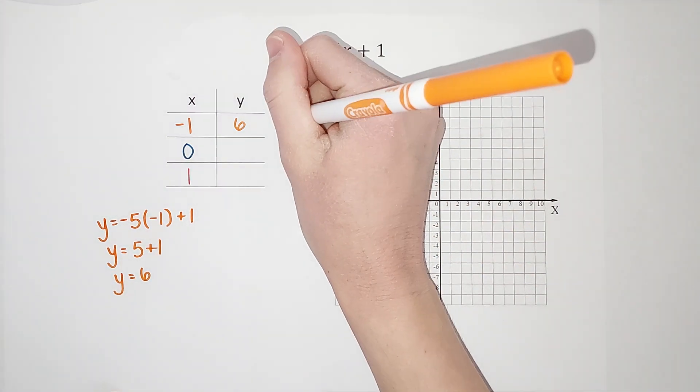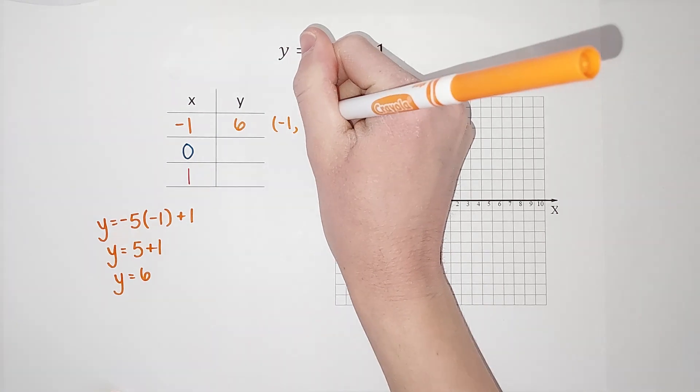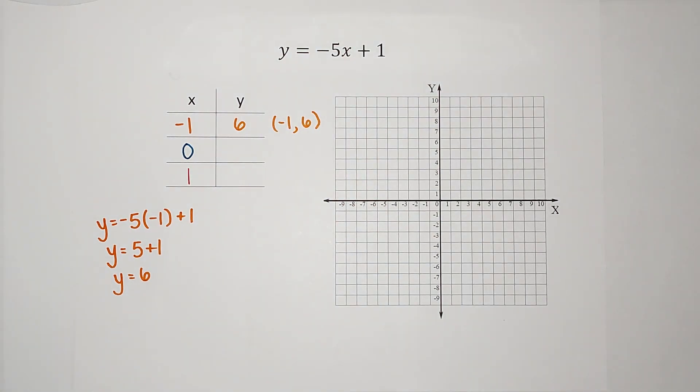And I could write this as an ordered pair if I wanted to: negative one, six. There is one point.